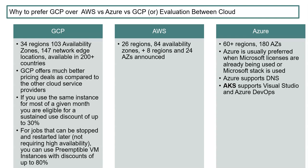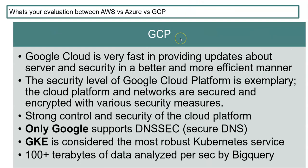Similarly, for jobs that can be stopped and restarted, those kinds of instances can get up to 80 percent discounts on GCP. Note that this is not for high availability use cases, but for batch or stoppable workloads. These are a few more parameters for why you can move to GCP.